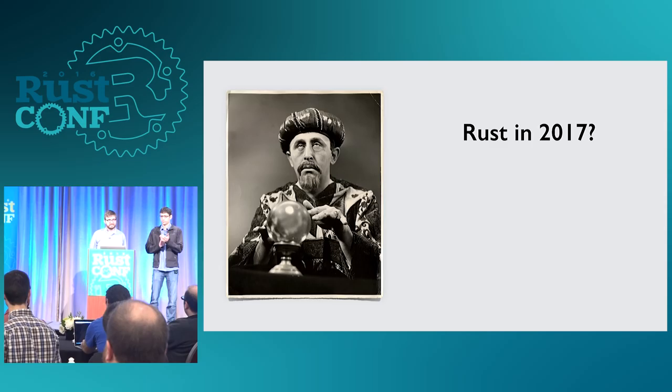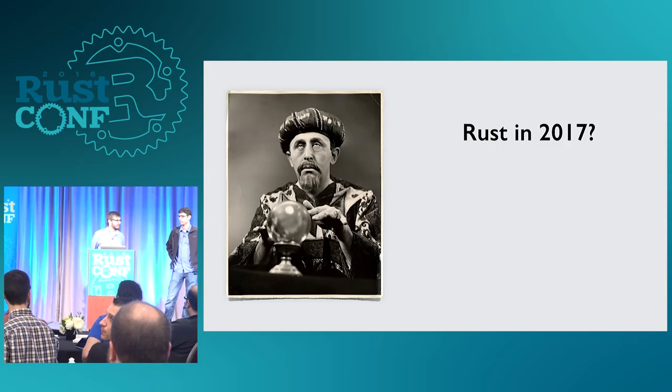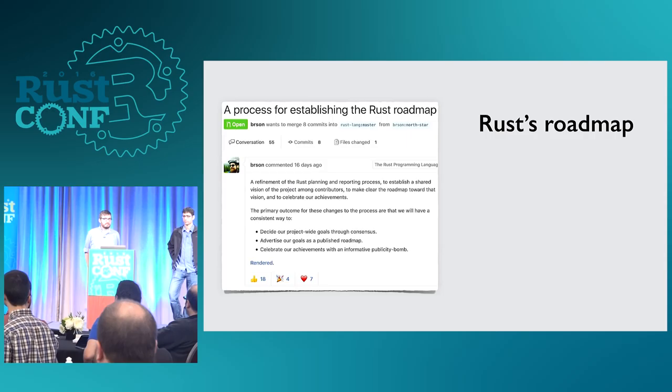What's on a lot of our minds here at the conference is: where do we go from here, what's ahead for Rust? We don't actually need a crystal ball to figure this out. The Rust core team has been putting a lot of thought into how we set out a vision for the next increment of Rust, how we execute that vision, and how we communicate it. There's been an RFC that Brian Anderson from the core team wrote up laying out some thoughts on how we build this process.